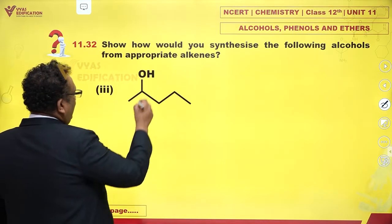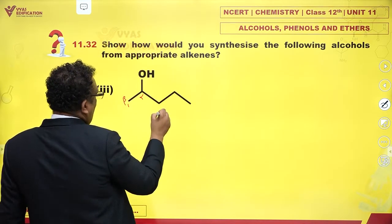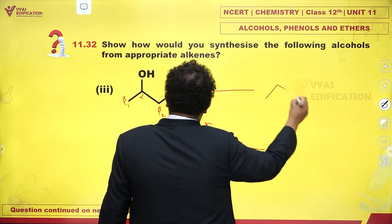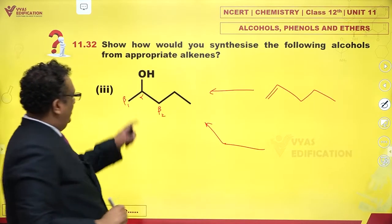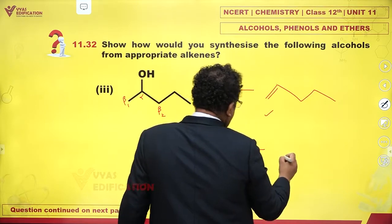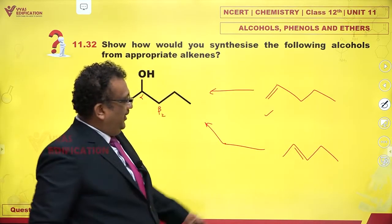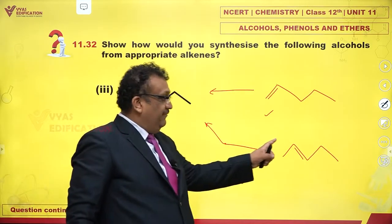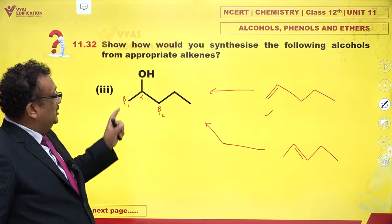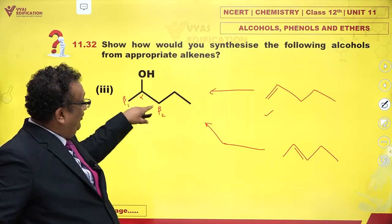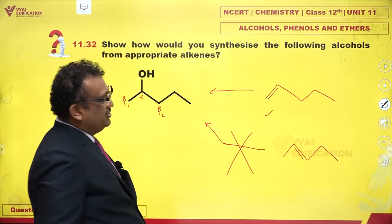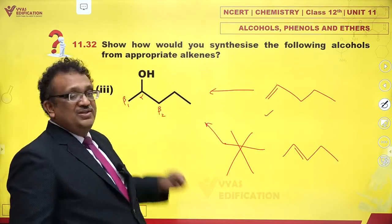The third alcohol is a bit more tricky. Alpha, beta 1, beta 2. If I make a pi bond like this, with H and OH Markovnikov addition, I get this — that is fine. If I take beta 2, there is a problem. If I hydrate this, OH can come on the third location or on the second location. So half of it would be this alcohol, and half would contain OH at the third location. That is really bad, so this is not the correct route. Let's reject this — only one possibility.